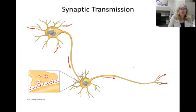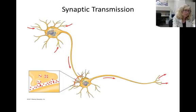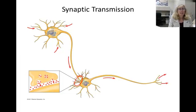In this way, an electrical signal that travels down one neuron is converted to a chemical signal at the synapse, which then triggers a second electrical signal in the next neuron. But most synapses are not as simple as a single presynaptic neuron and a single postsynaptic neuron.